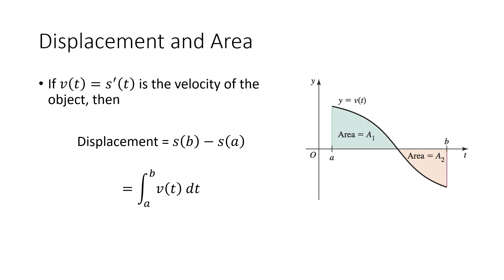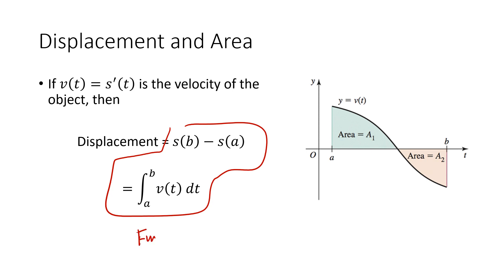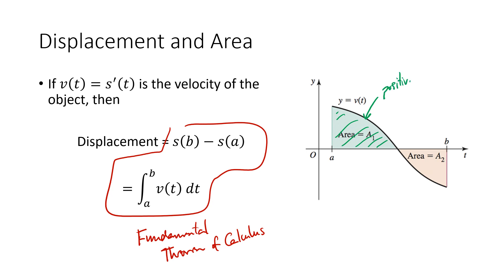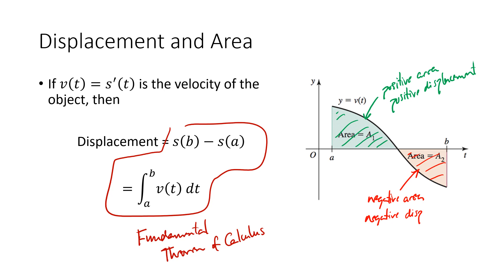How does this relate to integrals? If we integrate the velocity function from a to b, we get exactly the displacement: s(b) minus s(a). That's just the fundamental theorem of calculus — integrating a function from a to b means plugging a and b into the antiderivative, and the antiderivative of velocity is position. Graphically, integrals measure net area: positive area represents positive displacement, negative area represents negative displacement, and total displacement is the positive area minus the negative area.